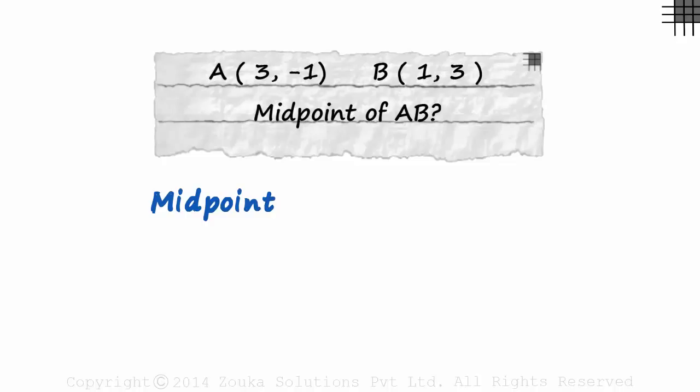The x coordinate of the midpoint is the average of the x coordinates of the endpoints. The x coordinates of A and B are 3 and 1. The average will be 3 plus 1 over 2. This is the x coordinate of the midpoint.